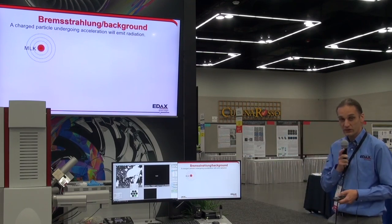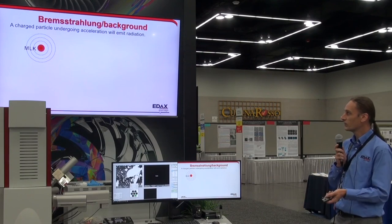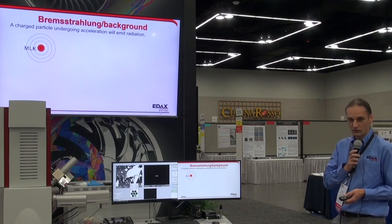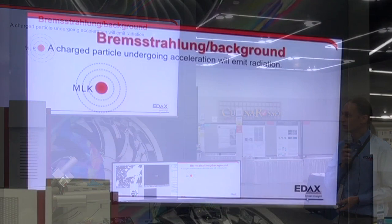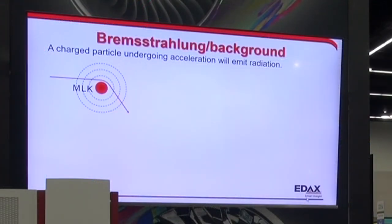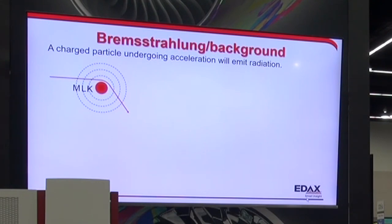Why does it happen inside the sample? If you have a core with shells around it, and think about one of the electrons we're shooting in from the electron gun — we have a positively charged core and a negatively charged electron, so we have Coulomb interaction between them. The negatively charged electron, the closer it is to the core, the more force is exerted on it, the more change in direction. As we move further out, we get less and less change.